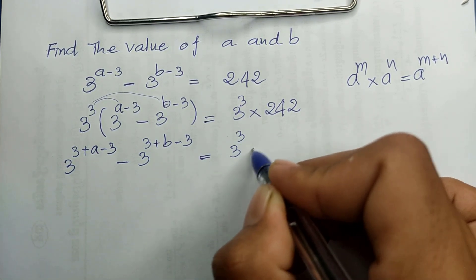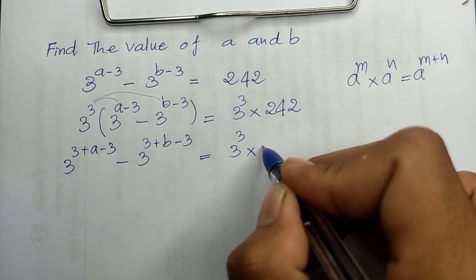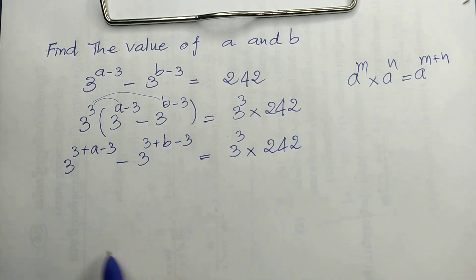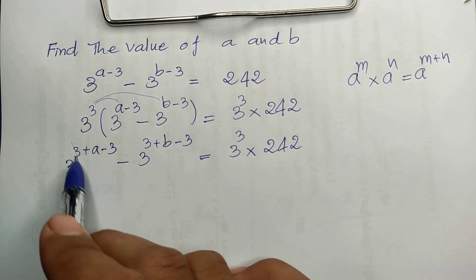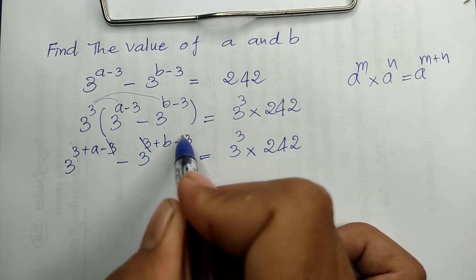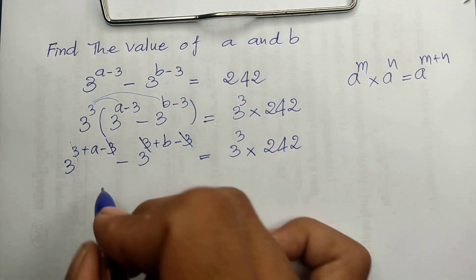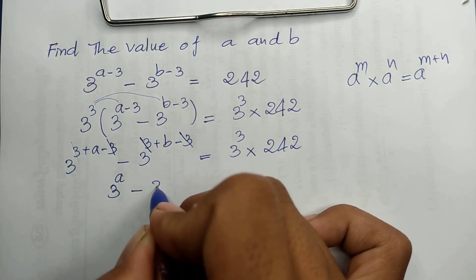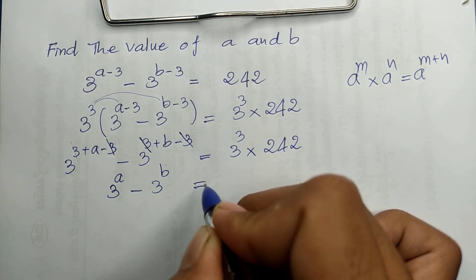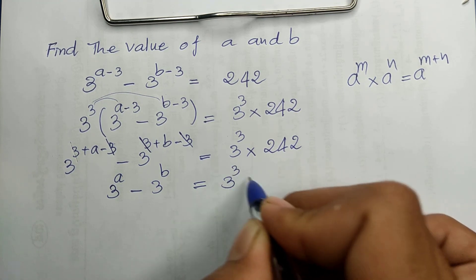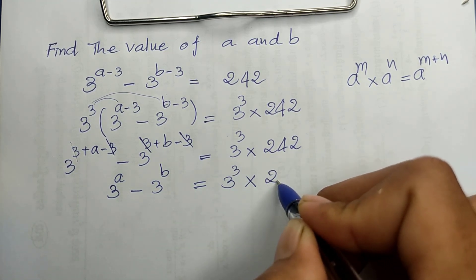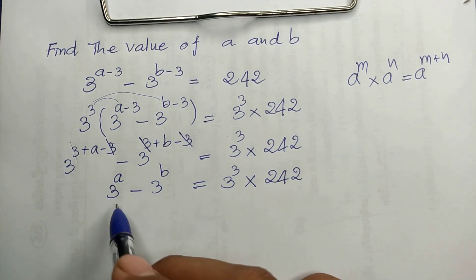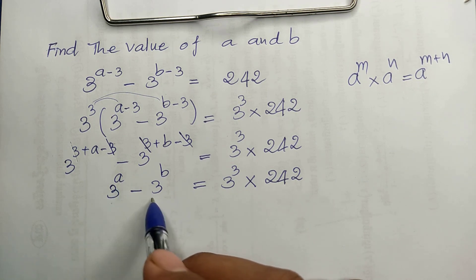The 3s cancel, and we simplify to get: 3^a minus 3^b equals 3^3 × 142.